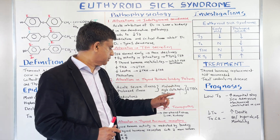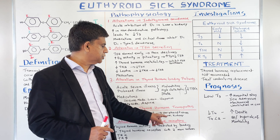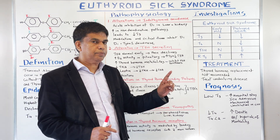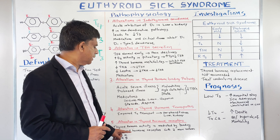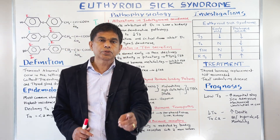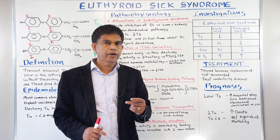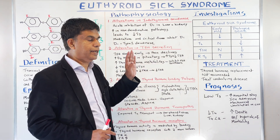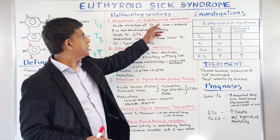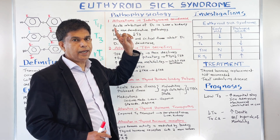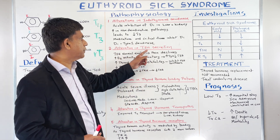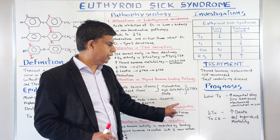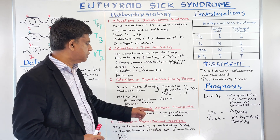Number four: alteration of thyroid hormone transporters. There is impaired T4 transport to peripheral tissues in the liver and kidneys — that's where most of this is happening. Number five: alteration of thyroid hormone receptors. Thyroid hormone activity is mediated by binding to thyroid hormone receptors. There are two receptors: TR-alpha and TR-beta. So those are five pathophysiology mechanisms to know.